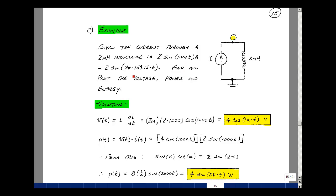It has an amplitude of 2 and a frequency of 1,000 radians per second. If we pull a 2π out of here, then we'll get the frequency in Hertz, and that turns out to be 159.15. Let's find and plot the voltage across, the power absorbed, and the energy absorbed by this inductance.